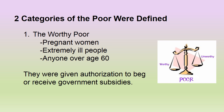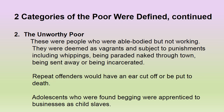This was before any realistic medical interventions — antibiotics had yet to be invented. If you got a broken leg, you were pretty much done for in most cases. The flu would kill people in massive numbers. The worthy poor were given authorization to beg or receive government subsidies. Then we have the unworthy poor — people who were able-bodied but not working. They were deemed vagrants and subject to punishments including whippings, being paraded naked through town, and being jailed or incarcerated. Repeat offenders would have an ear cut off or be put to death. Adolescents found begging were apprenticed to businesses as child slaves.